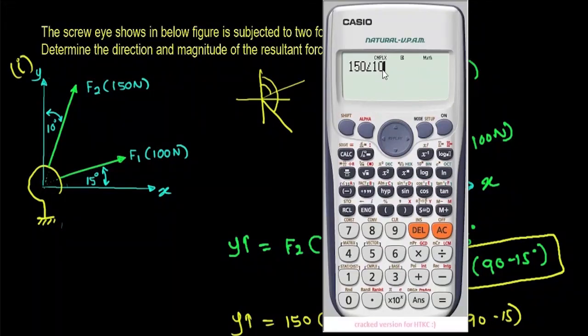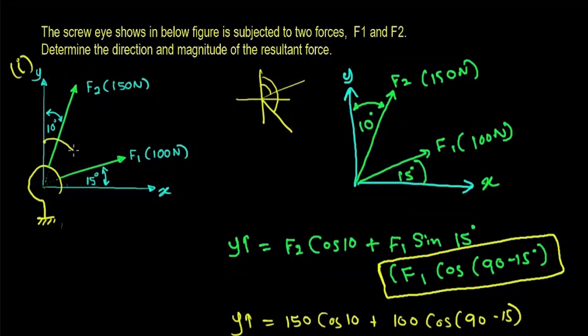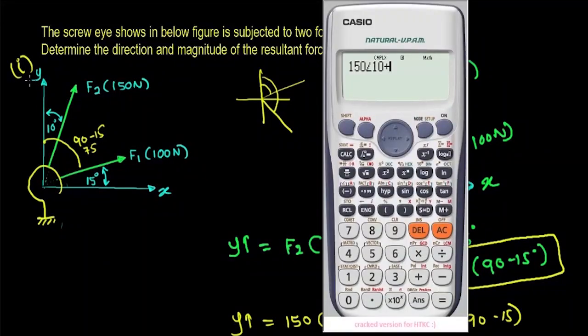This term is representing the F2 force. Plus, you have to find out the angle from the imaginary axis to this point which is equal to 90 minus 15. In this case, it will be 75. So, 100 newton at an angle of 75. Now I'm going to add these forces. Press equal.